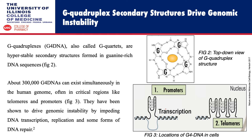G-quadruplexes, or G4 DNA, or G-quartets, are hyperstable secondary structures that are formed in guanine-enriched DNA sequences. About 300,000 G4 DNAs can exist simultaneously in the human genome, often found in critical regions like telomeres and promoters. They have been shown to drive genomic instability by impeding DNA transcription and some forms of DNA repair.